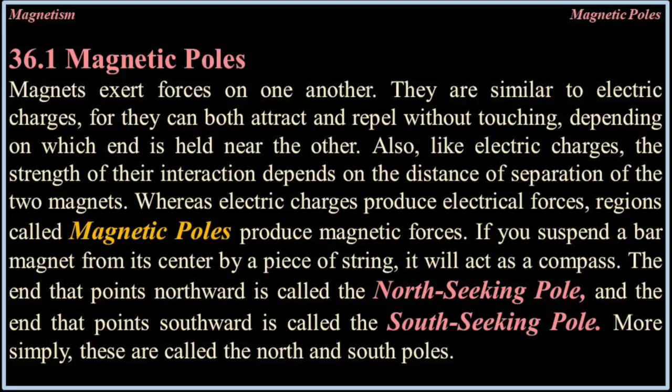36.1 Magnetic poles. Magnets exert forces on one another. They are similar to electric charges, where they can both attract and repel without touching, depending on which end is held near the other. Also, like electric charges, the strength of their interaction depends on the distance of separation of the two magnets. Whereas electric charges produce electrical forces, regions called magnetic poles produce magnetic forces.